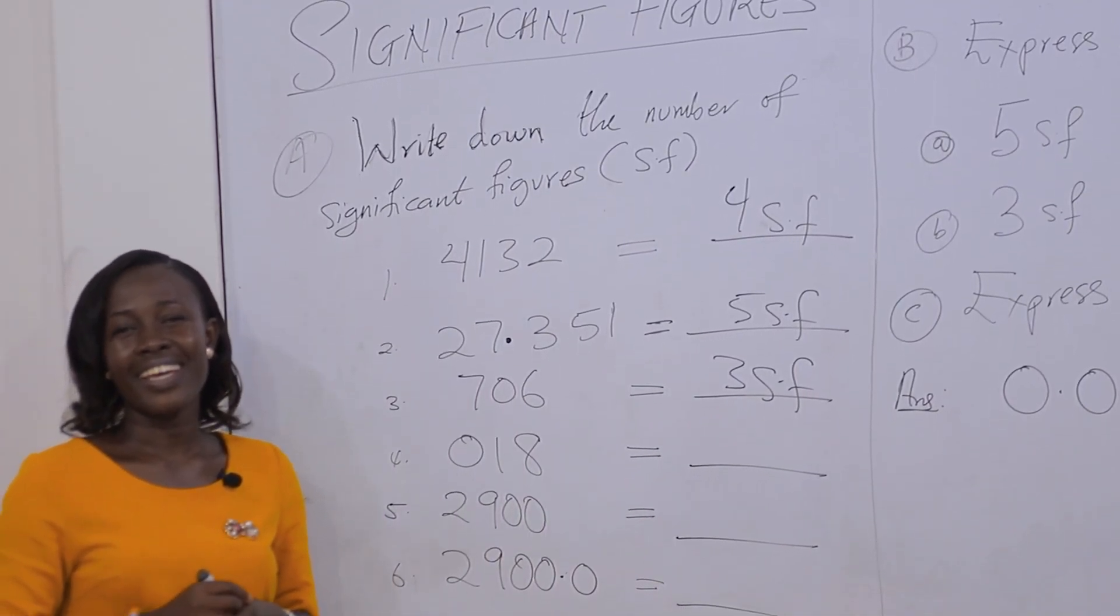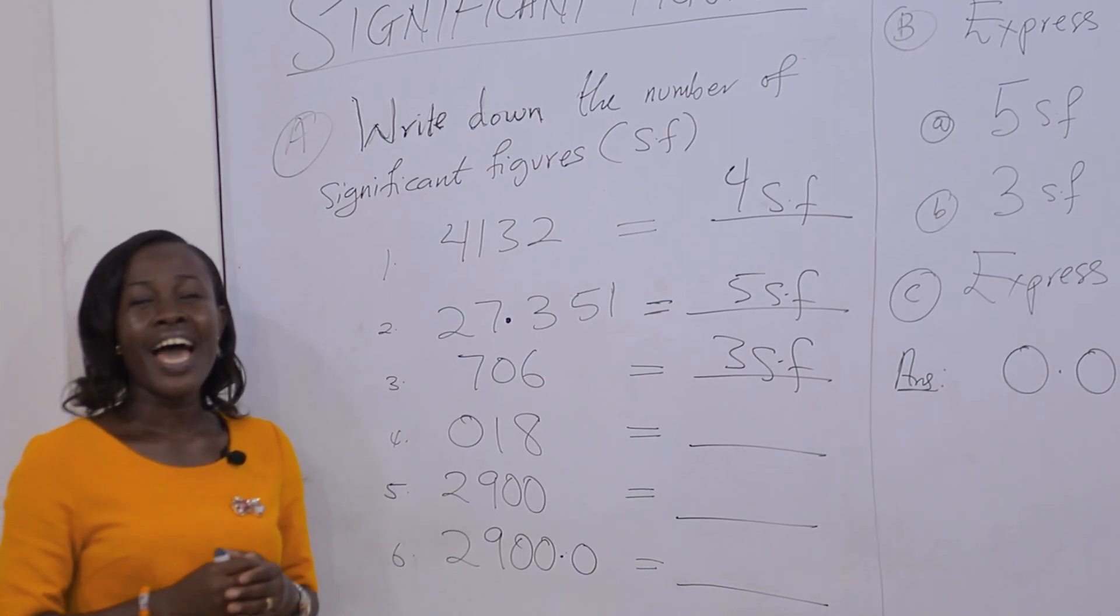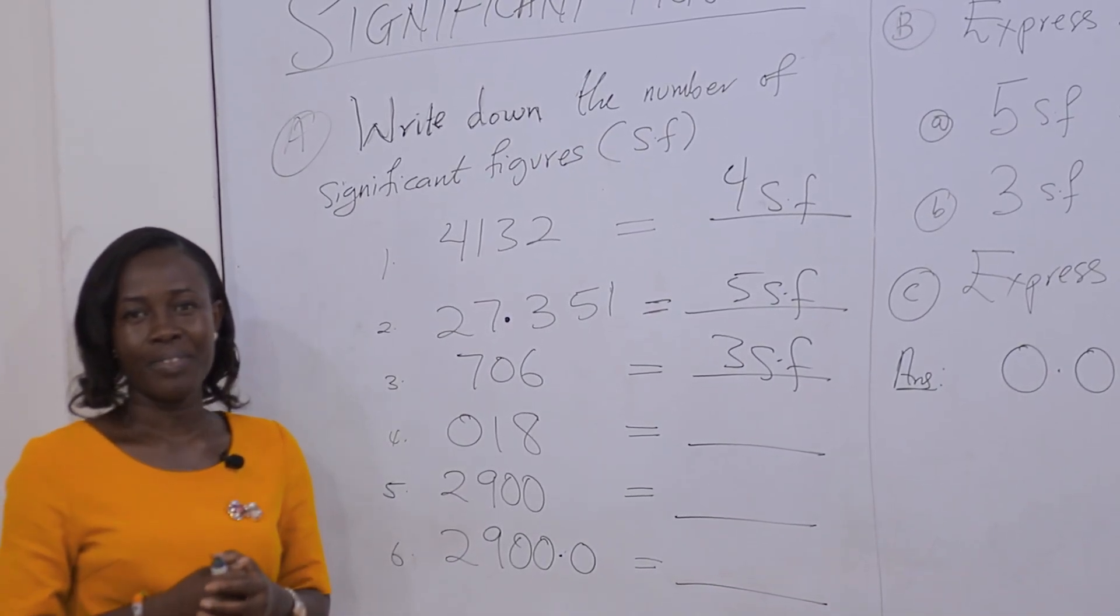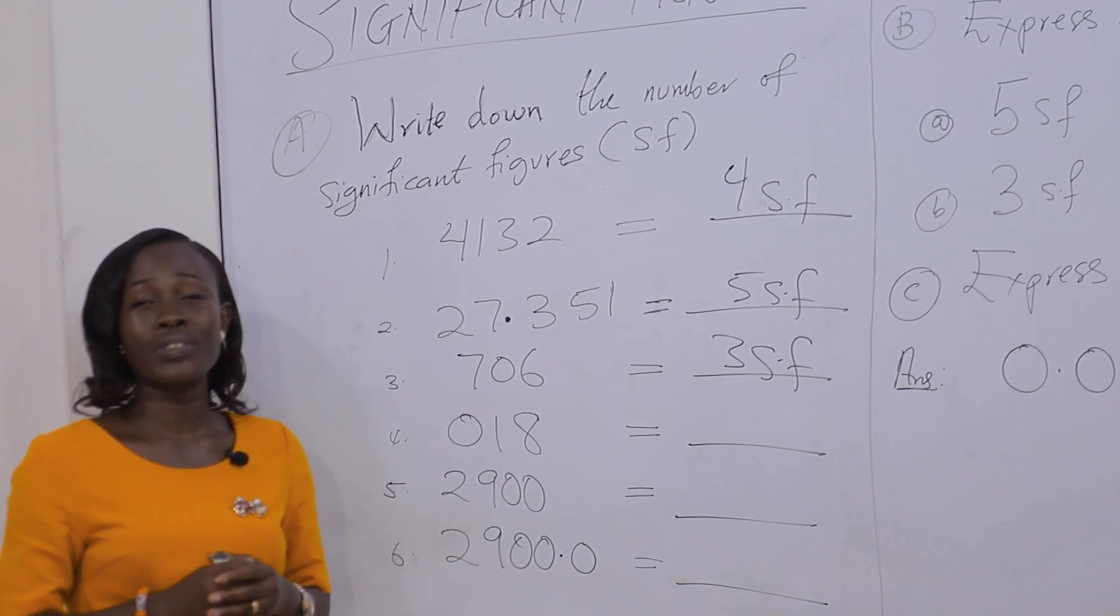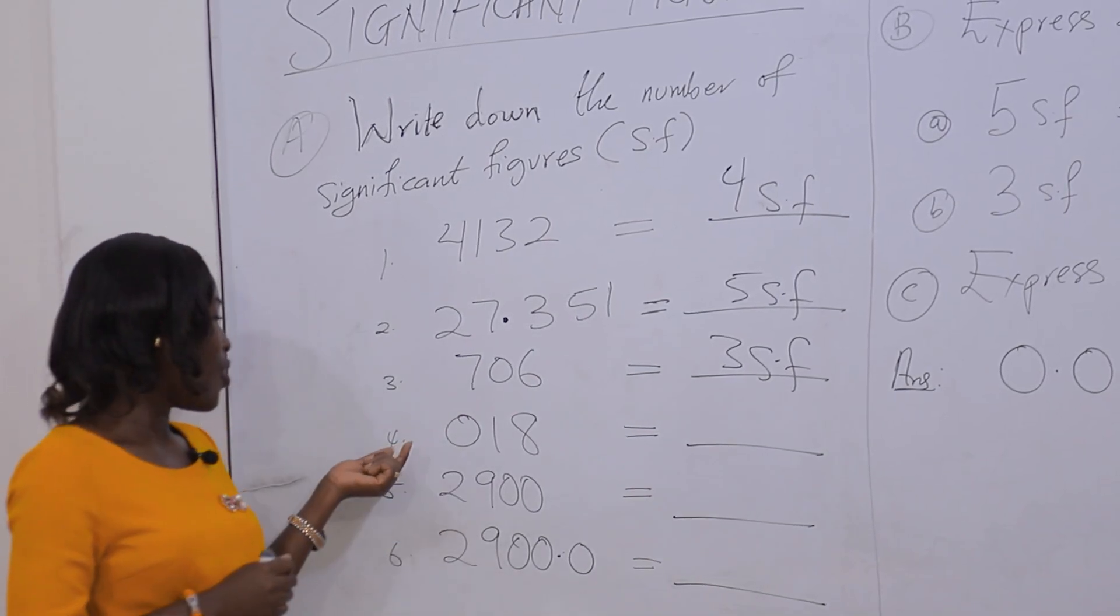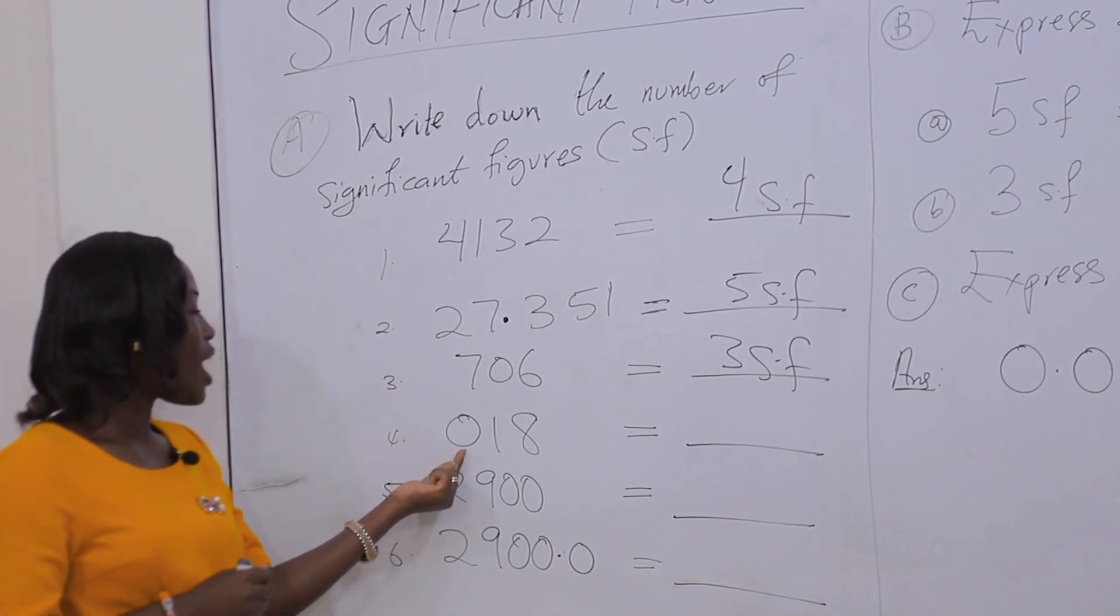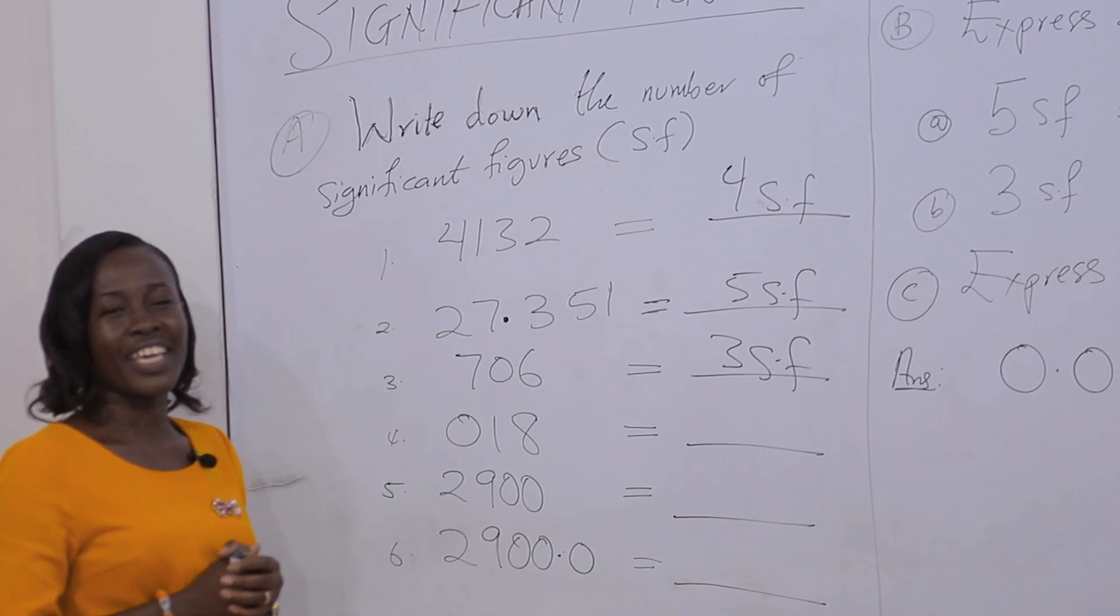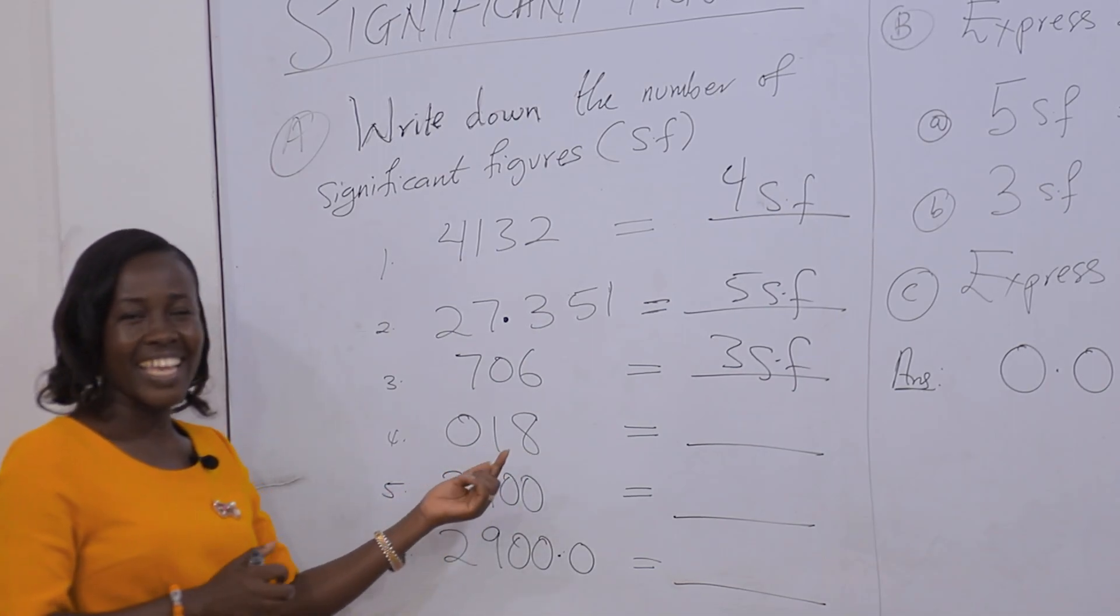Rule 3: Leading zeros. Leading zeros are zeros that begin a number. Leading zeros are therefore considered insignificant. So for example 4, 018 has only 2 significant figures: 1 and 8.